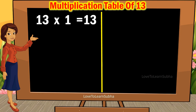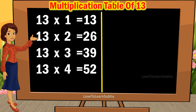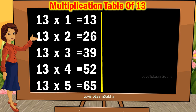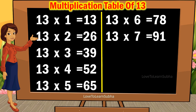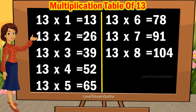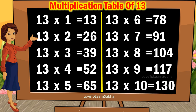13 ones are 13, 13 twos are 26, 13 threes are 39, 13 fours are 52, 13 fives are 65, 13 sixes are 78, 13 sevens are 91, 13 eights are 104, 13 nines are 117, 13 tens are 130.